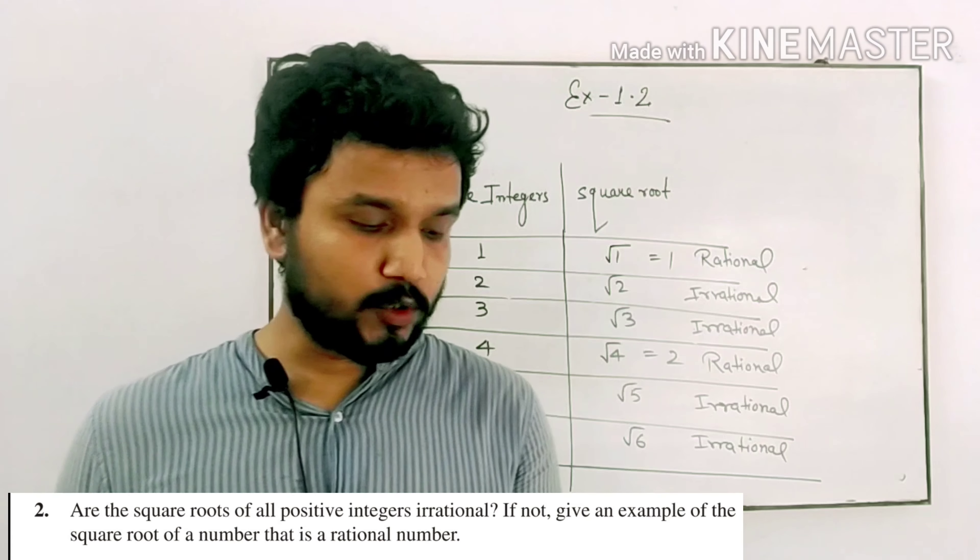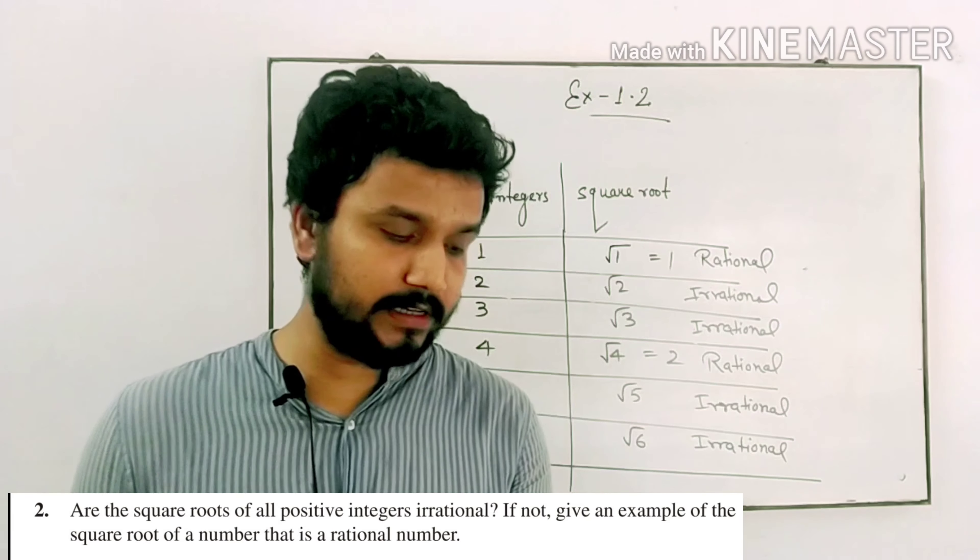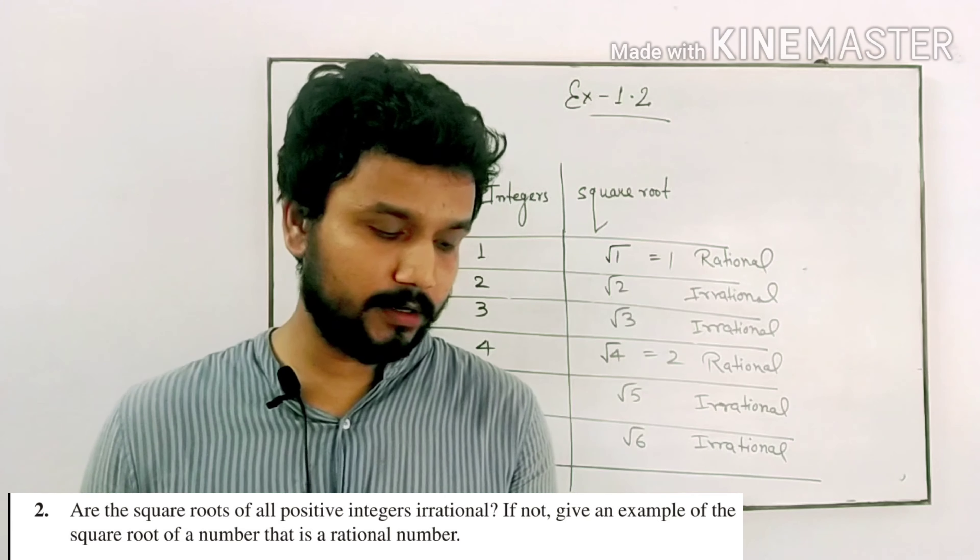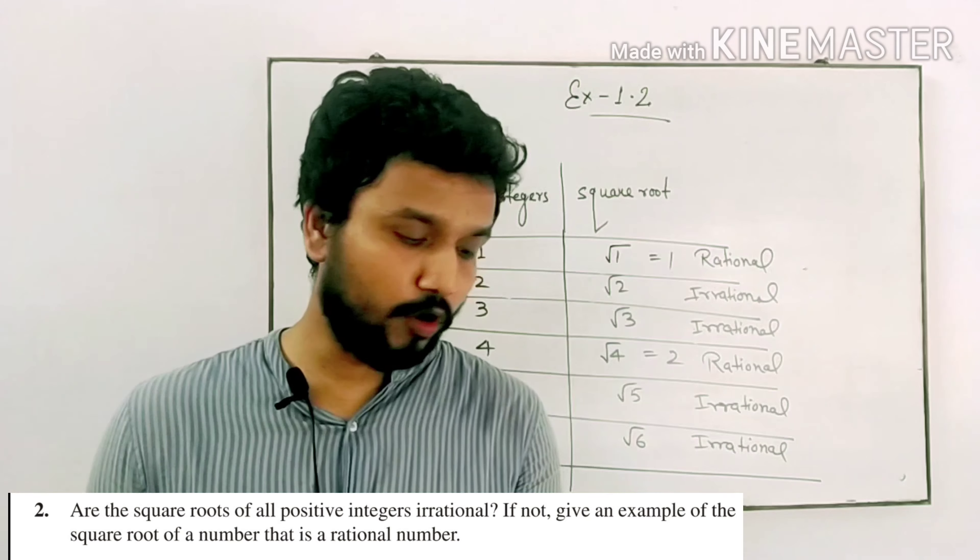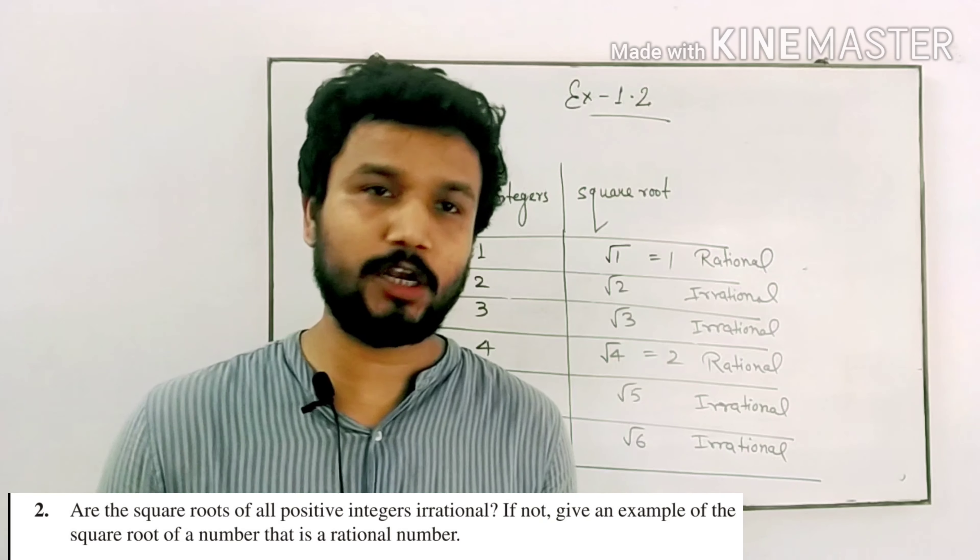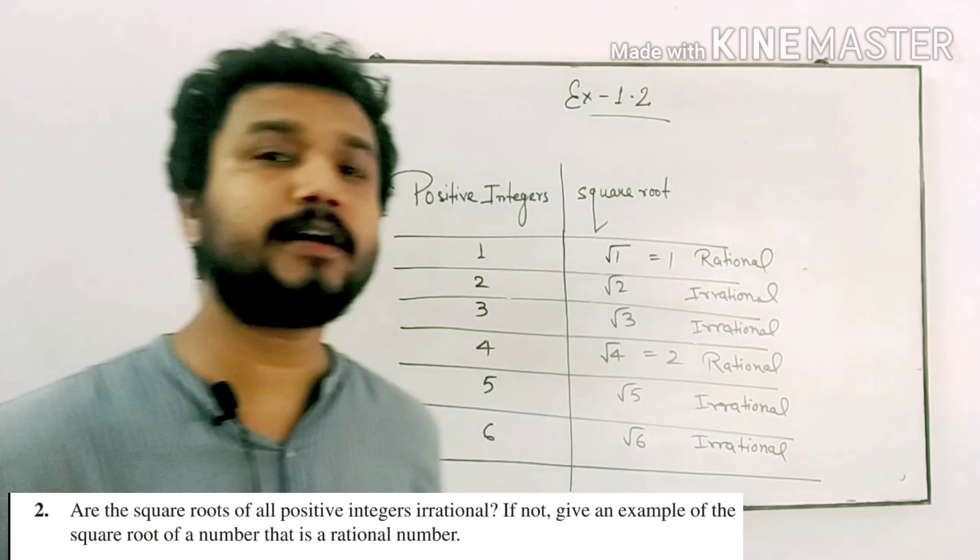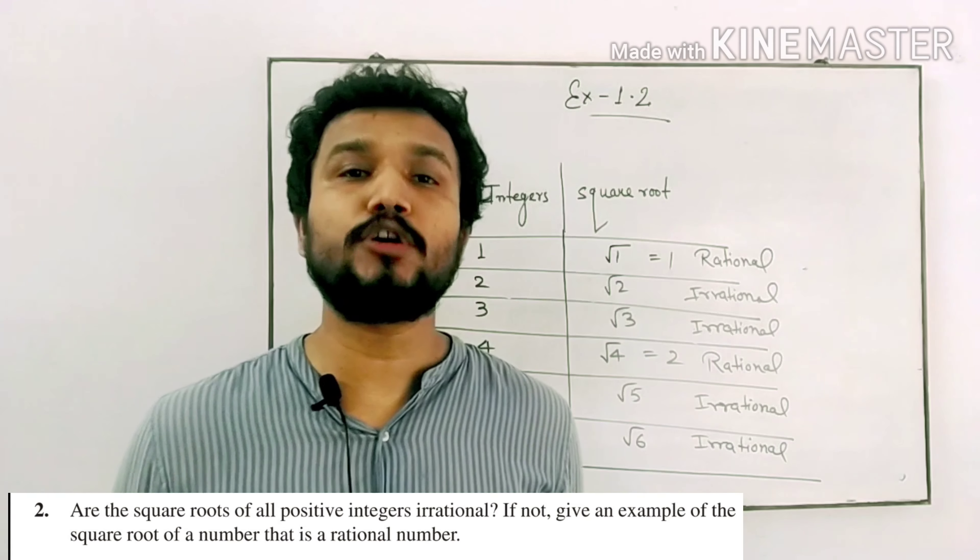Question number 2: Are the square roots of all positive integers irrational? If not, give an example of the square root of a number that is a rational number.